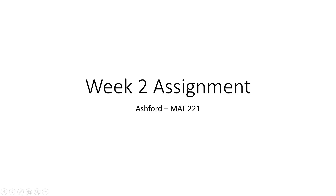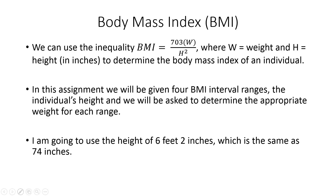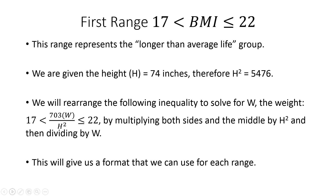This is a short tutorial on the week 2 assignment. We can use the formula: body mass index equals 703 times the weight of the individual divided by the individual's height squared. We'll work through this assignment using that formula. I'm going to use the height of 6 feet 2 inches, which is the same as 74 inches, so be sure to convert your height into inches.